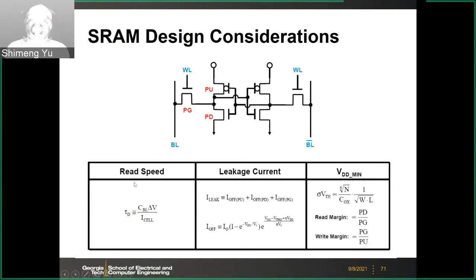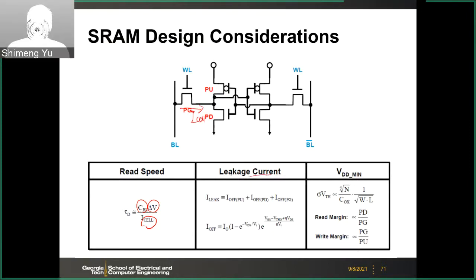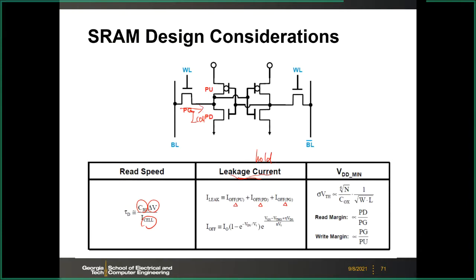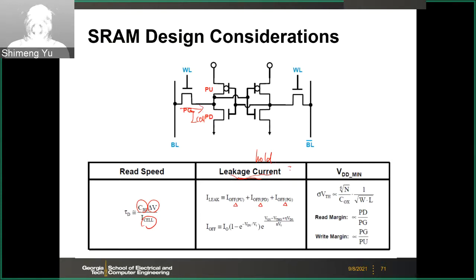The read speed is mostly determined by the current through the pass gate: t = C_BL × ΔV / I. Regarding leakage: during the hold operation, analyzing the 6T cell in detail shows that one pull-up, one pull-down, and one pass gate transistor contribute leakage current. We look for transistors biased in the off state — where the gate is at zero and source/drain are at VDD — which produces subthreshold leakage current I_off.